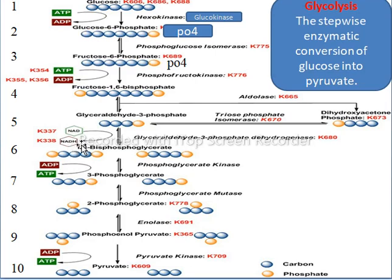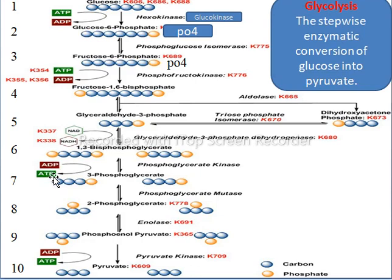In the next step they lose a phosphate, forming 3-phosphoglycerate, and the enzyme involved is phosphoglycerate kinase. This enzyme converts ADP into ATP. Here we gain the first ATP of glycolysis.